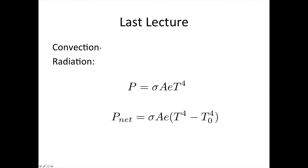We then had a quick look at convection, and then we looked at radiation. For radiation, we could calculate the rate of heat transfer using P equals σAεT^4. In this equation, σ is Stefan's constant, A is the surface area of the body radiating the heat, ε is the emissivity, a number between 0 and 1.